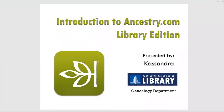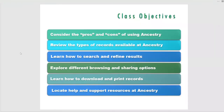Now everybody should be seeing my PowerPoint. This is Ancestry Library Edition — it still says Cassandra up there from when I was using my more formal name. You can just call me Kay. I really love Ancestry Library Edition because, first of all, it saves you money, and secondly, it eliminates a lot of the noise that comes with Ancestry — it's very streamlined. In this class, we're going to talk about the pros and cons of using Ancestry, the different types of records available, how to research and refine results, explore browsing and sharing options, and how to download and print records and locate help and support resources, both at Ancestry and here at the library. We should be done by 3:45.